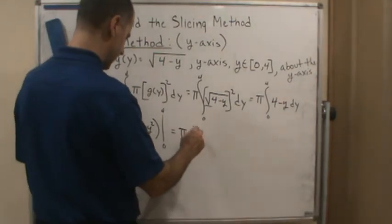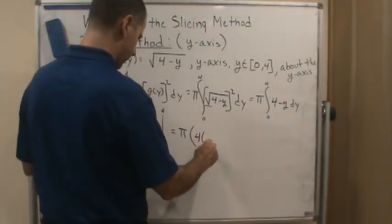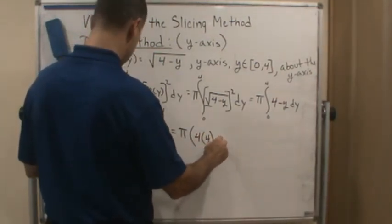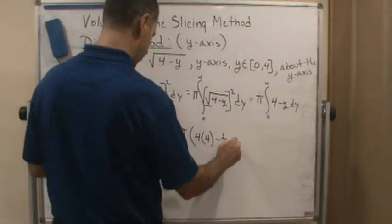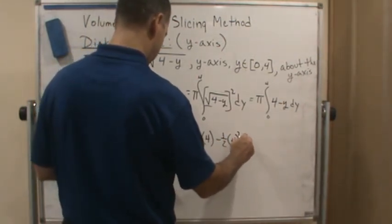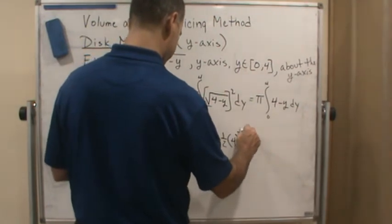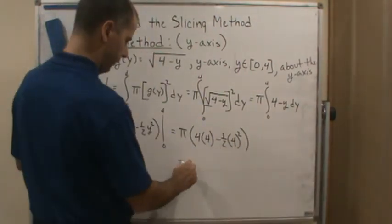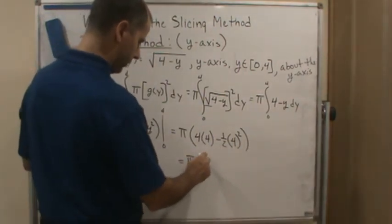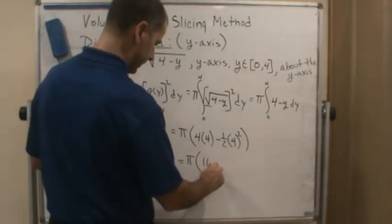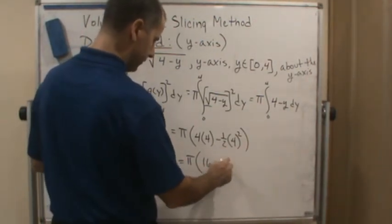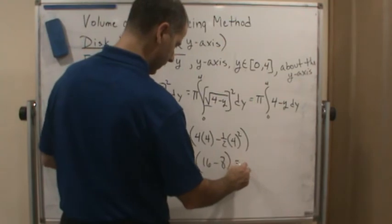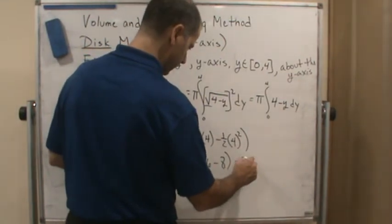So this is going to be pi times 4 times 4 minus 1 half 4 squared. And if we go one step further, we get 16 minus 1 half of 16, which is 8. And so we get 8 pi.